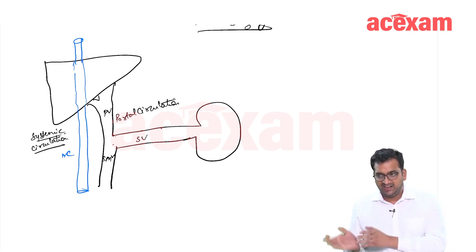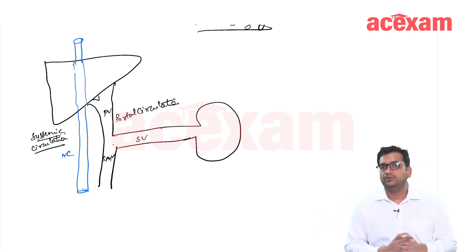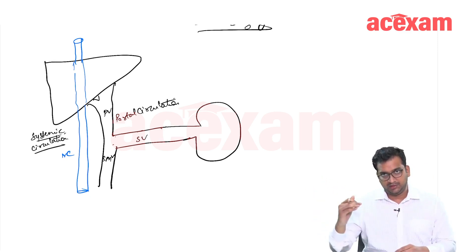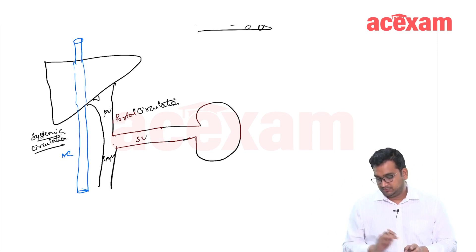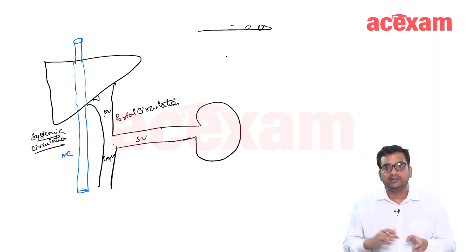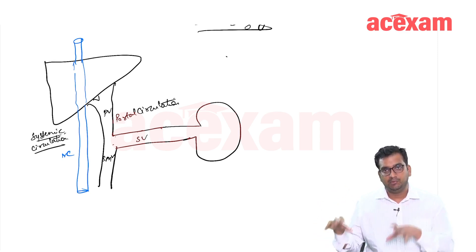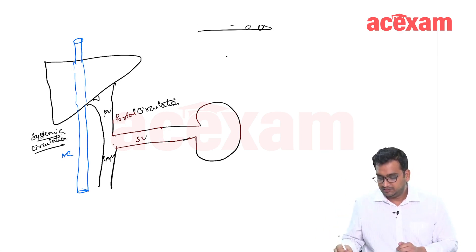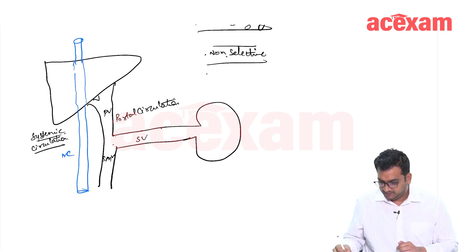We want to drain this portal pressure into the systemic circulation. So anywhere there is a communication between the portal circulation and the systemic circulation, the excess portal blood will go into the systemic circulation. Since the portal system is valveless, blood in the portal system will go unidirectionally — this type of flow will be a non-selective shunt where complete migration of portal blood occurs.